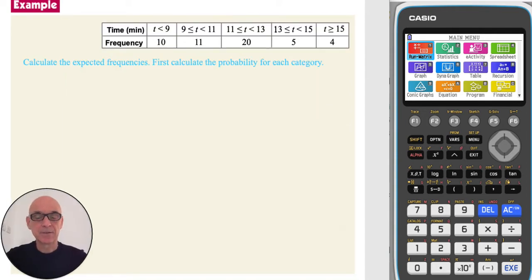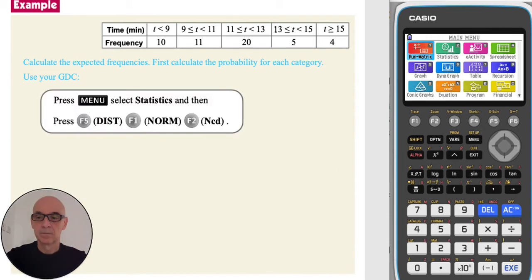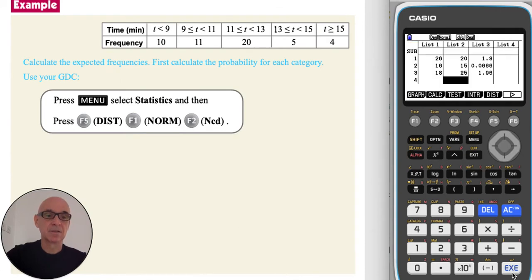To calculate the expected frequencies we first need to calculate the probability for each category. We do this on your calculator. From the main menu, select statistics and then press F5 for a distribution, F1 for a normal distribution, and F2 for a normal cumulative probability calculation.